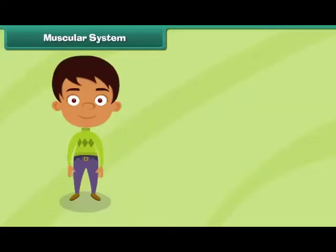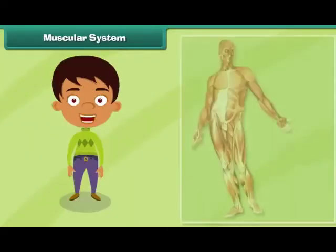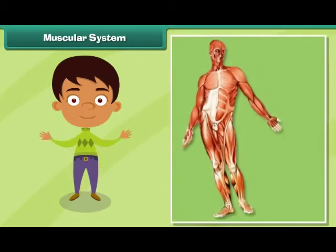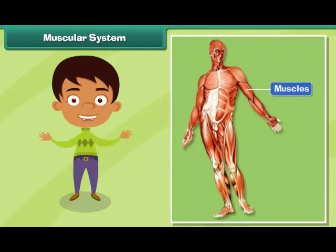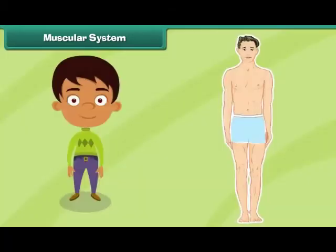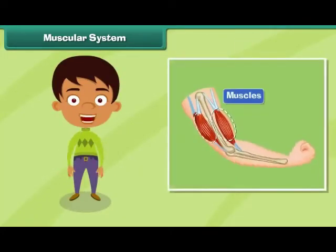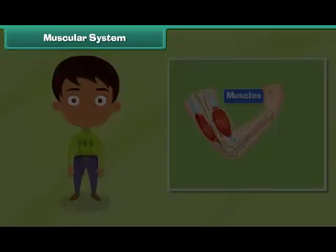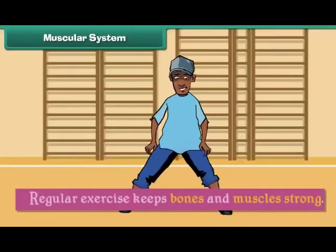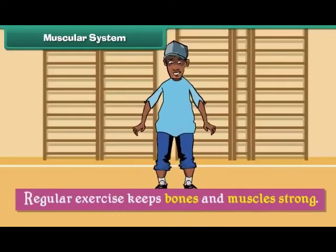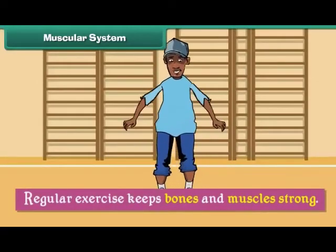Muscular system. The human muscular system is made up of muscles. Muscles are the soft and fleshy parts of the human body. They are attached to bones and enable movement. Regular exercise keeps bones and muscles strong.